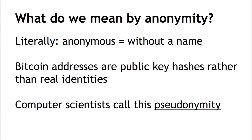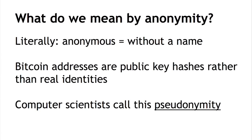If you interpret it as interacting without your real name, then certainly Bitcoin is anonymous in that sense. But we do have these public key hashes that act as some sort of pseudo identities. When computer scientists look at the situation, they don't use the term anonymous to describe this — they call this pseudonymity. And it's an important distinction. Even though you can create any number of pseudonyms, that does not make it truly anonymous.